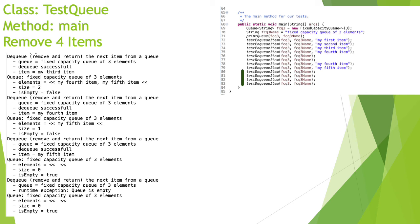Finally, we try to remove items four times. The first three dequeues succeed, returning the third, fourth, and fifth items respectively. After retrieving the fifth item the queue is empty, so when we try to dequeue a fourth time we get a runtime exception indicating that the queue is empty.